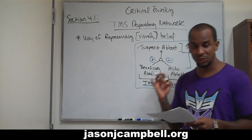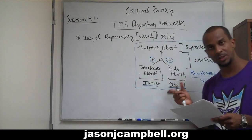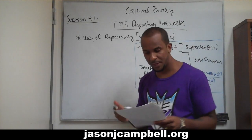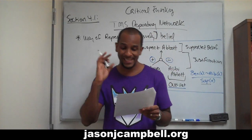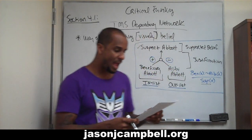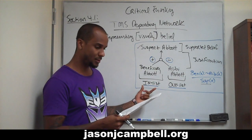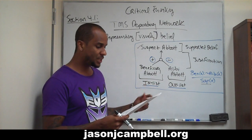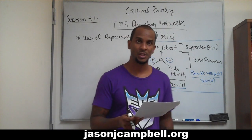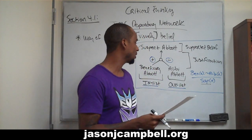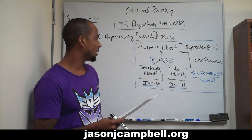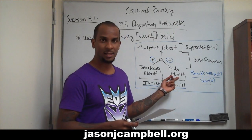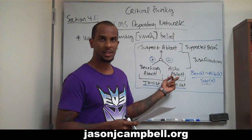Assertions are believed when they have a valid justification. How is a justification valid? A justification is valid if every assertion in the in-list is believed and none of the assertions in the out-list is believed. We don't believe that he has an alibi.